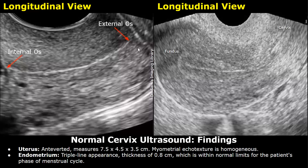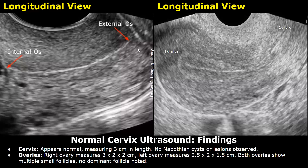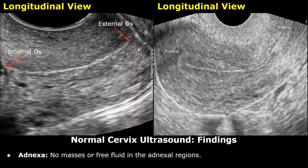The cervix appears normal, measuring 3 centimeters in length. No nabothian cysts or lesions observed. The right ovary measures 3 x 2 x 2 centimeters; left ovary measures 2.5 x 2 x 1.5 centimeters. Both ovaries show multiple small follicles with no dominant follicle noted. No masses or free fluid in the adnexal regions.